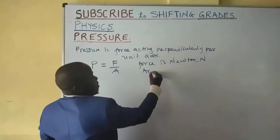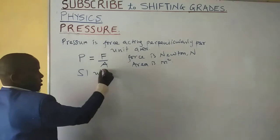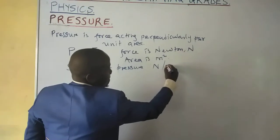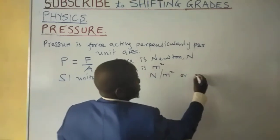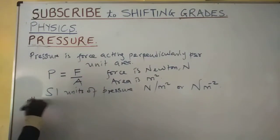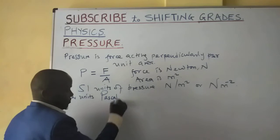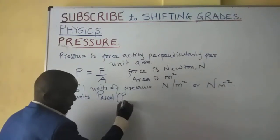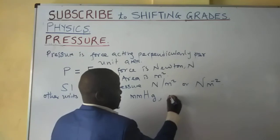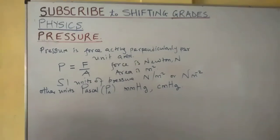The units of force are Newtons (N) and the units of area are square meters, therefore the SI units of pressure are Newtons per meter squared. Other units used to record pressure include the Pascal, abbreviated as Pa, millimeters of mercury, and centimeters of mercury.